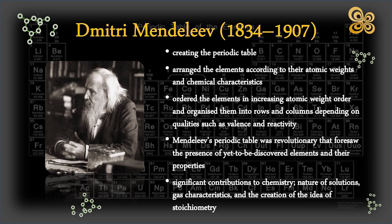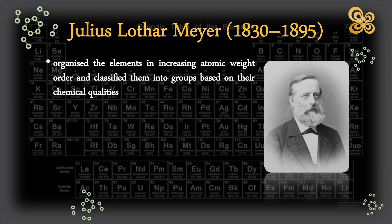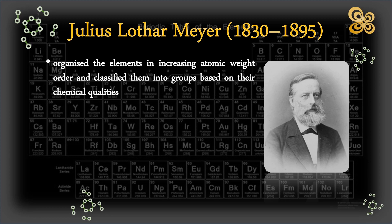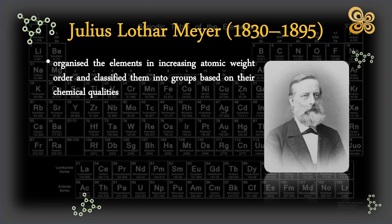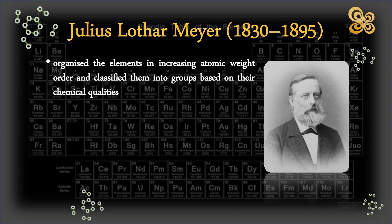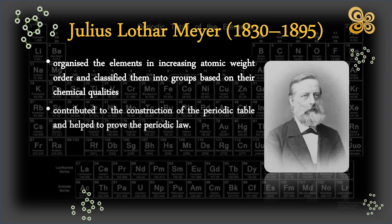The periodic law, which was independently proposed by German chemist Julius Lothar Meyer, asserts that when elements are organized in ascending atomic weight order, their properties repeat periodically. The periodic table was created by Dmitri Mendeleev using a similar theory. Meyer and Mendeleev started developing their periodic systems in the late 1860s. His approach organized the elements in increasing atomic weight order and classified them into families based on their chemical qualities. Meyer, like Mendeleev, noticed repeated patterns in the properties of elements and used these patterns to anticipate the properties of unknown elements. Meyer's study was released in 1870, a year after Mendeleev's paper. While Mendeleev's table is the more well known, Meyer's work greatly contributed to the construction of the periodic table and helped to prove the periodic law.